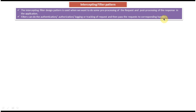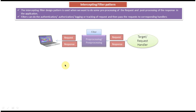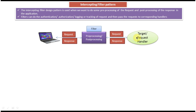We will see one diagram so that you will understand this clearly. Here you can see the client on the left, the target on the right, and the filter in the middle. Usually the client sends a request to the target. Before the request reaches the target, we can preprocess the request using the filter. The target will process the request and send a response to the client, and before the response reaches the client we can do post-processing.